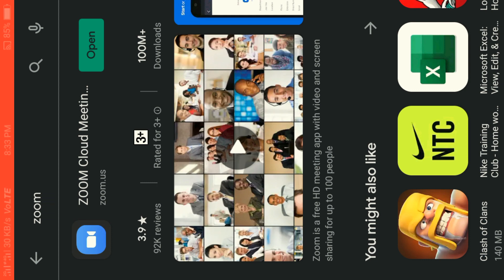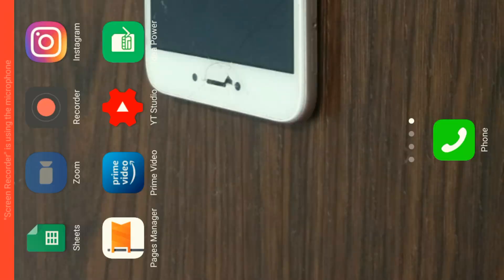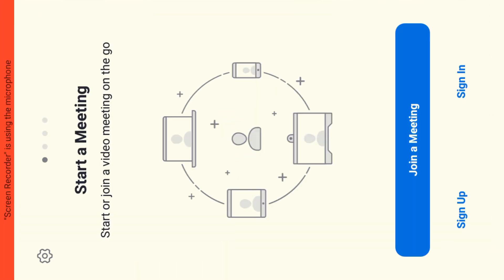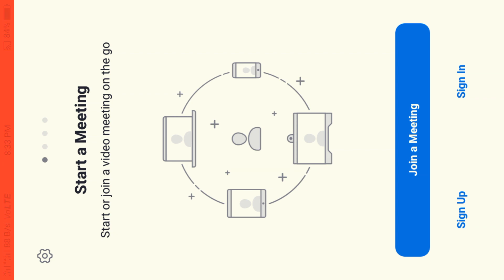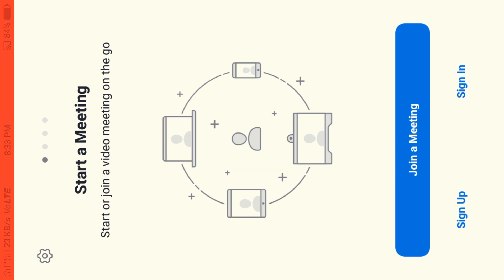You can install the Zoom Cloud Meeting app. In this screen, there are three options: Join Meeting, Sign Up, and Sign In. If you have a meeting invitation, you can enter your meeting ID and password, then press the Join Meeting option.